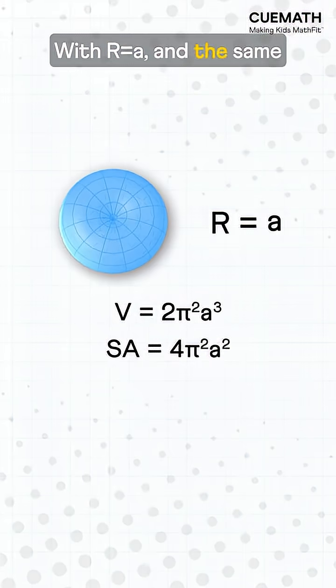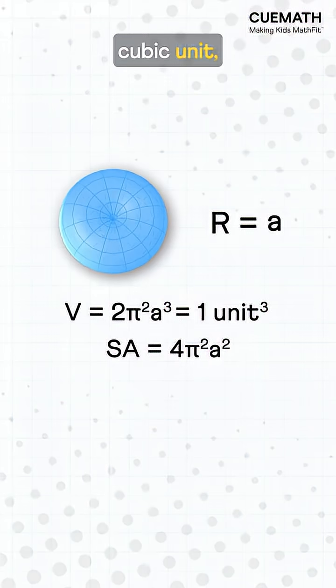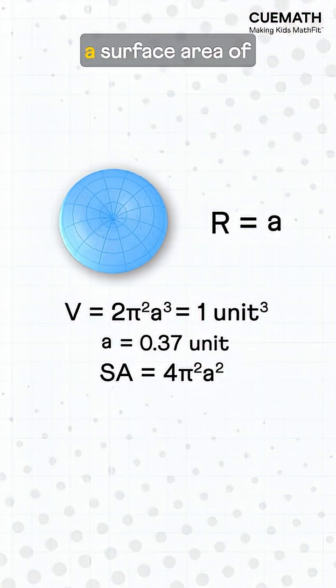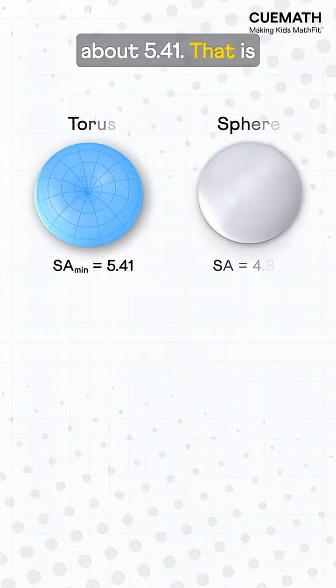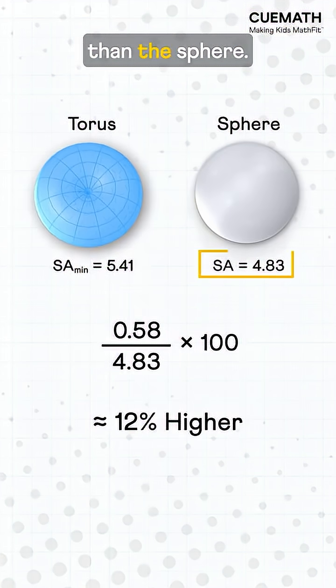With r equal to a and the same volume of one cubic unit, the torus has a surface area of about 5.41. That is still 12% more than the sphere.